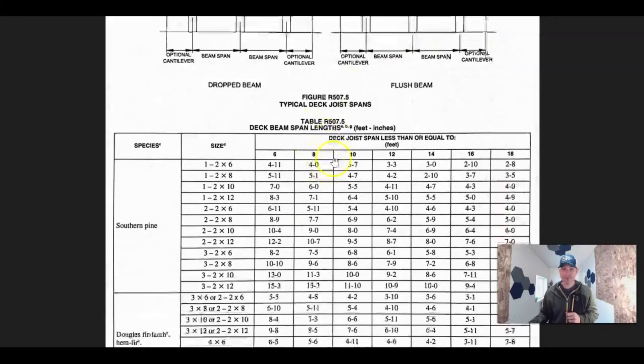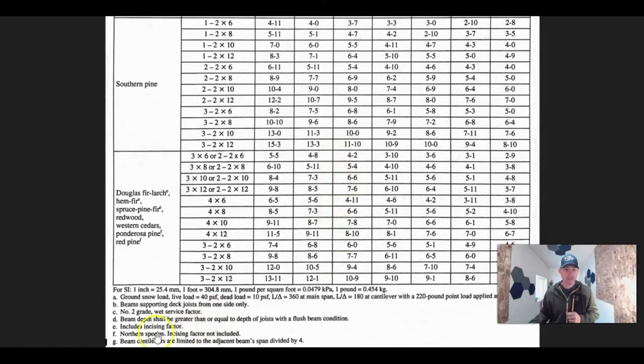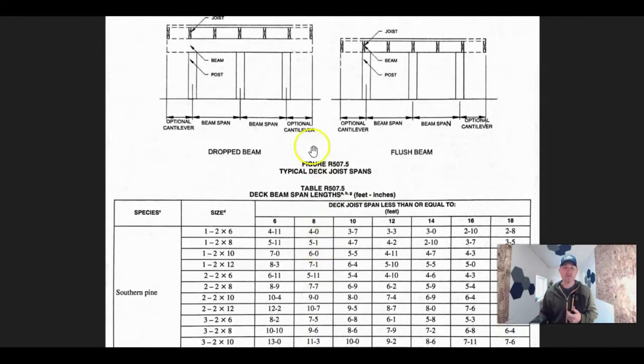How far can you go? Well, if you go down here, very bottom, it says beam cantilevers are limited to the adjacent beam span divided by four. The adjacent beam span divided by four, right? So one fourth. So beam span, beam span, and then your cantilever. So from here, you're going this way. You divide that by four.